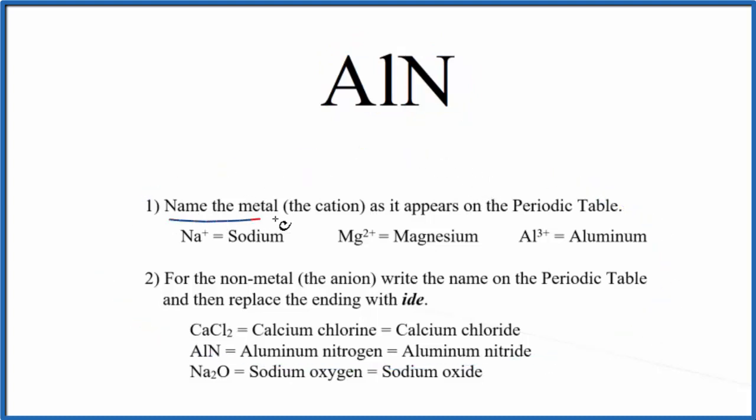First, we write the name for the metal as it appears on the periodic table. So aluminum, that's the metal, so we write aluminum.